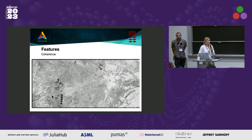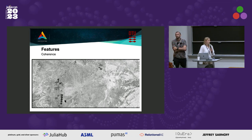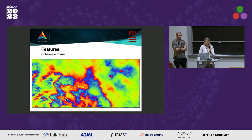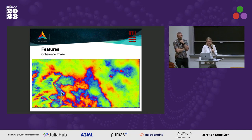Another feature possible with SARprocessing.jl is calculation of coherence. Coherence is a degree of similarity between two images acquired over the same area. High-intensity pixels are bright and have high coherence, meaning there was no change between two acquisitions, while dark pixels have low coherence, meaning we expect there was a change — so on the fields, there was definitely some change, like a harvest. Then we have a coherence phase, which is a filtered version of the phase shown previously. In the fields, there is some noise because the fields had very low coherence values and should not be covered by fringes.